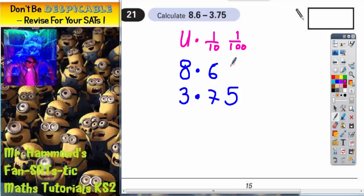Now, if there's no hundredths, it might help us to put a zero in there to fill this gap in. So at least we know that 8.6 is the same as 8.60. 8 units, 6 tenths, and no hundredths. Now it's all nicely lined up, we need to start getting ready to actually subtract this.